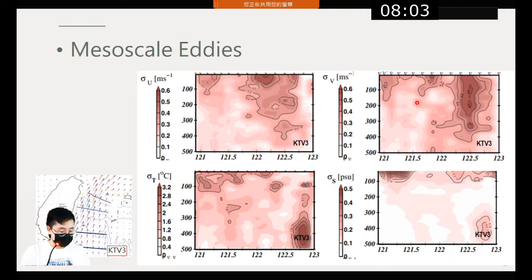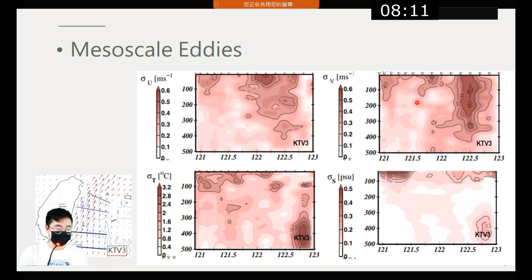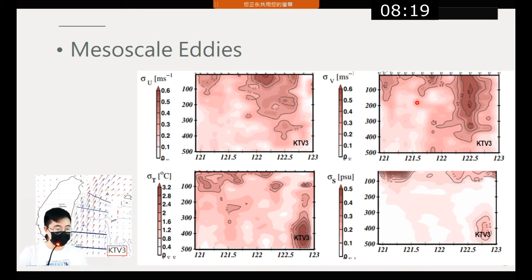In the last part of the data section I mentioned the dual-core velocities seen in the mean velocity slides. I will now explain the first mechanism. Here I have put all standard deviation figures for the OKTV-3 transect together.